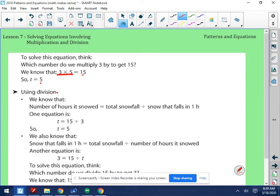Another way of solving it is we can use division. We know that the number of hours it snowed equals the total snowfall divided by the snow that falls in one hour. So the number of hours it snowed equals the total snowfall, which is 15 centimeters, divided by 3 centimeters an hour. So T is 15 divided by 3. T equals 5.